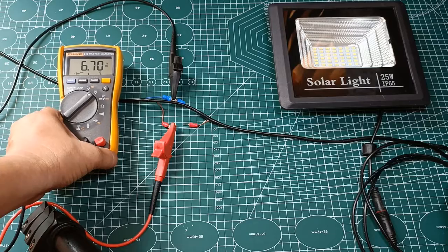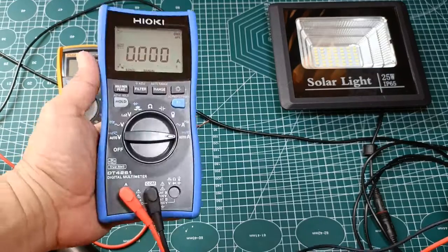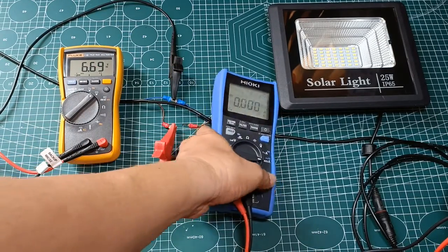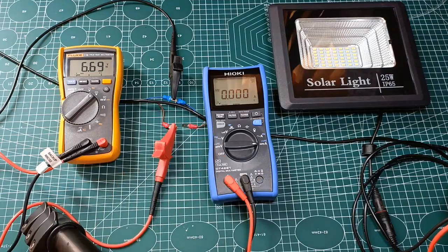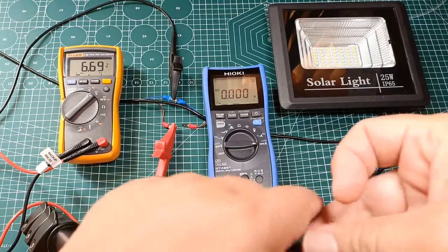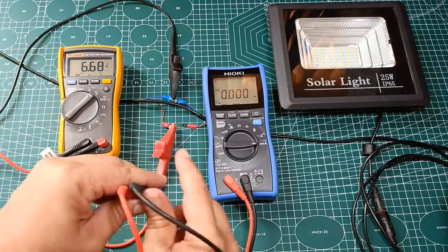Right now 6.7 volts is displayed by the Fluke 116 which is the open circuit voltage. So now connecting the DT4261 in series with the positive line.